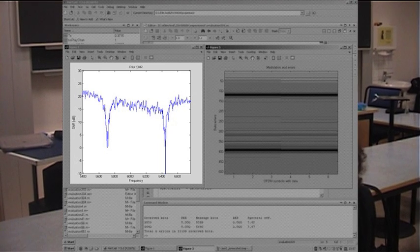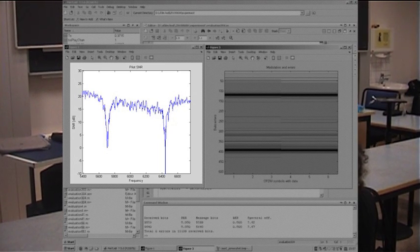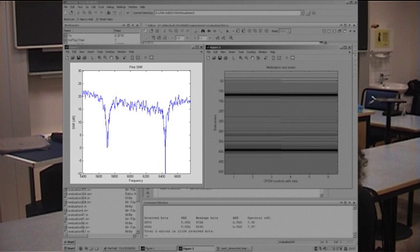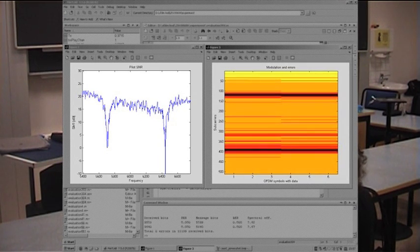To the left we see the signal-to-noise graph again, but now we see two dips at the disturbance frequencies. To the right we have the transfer image. We see, as previously, the adaptive modulation, which uses two black regions. This corresponds to an outage, meaning that those subcarriers are not used because of the detected disturbance.